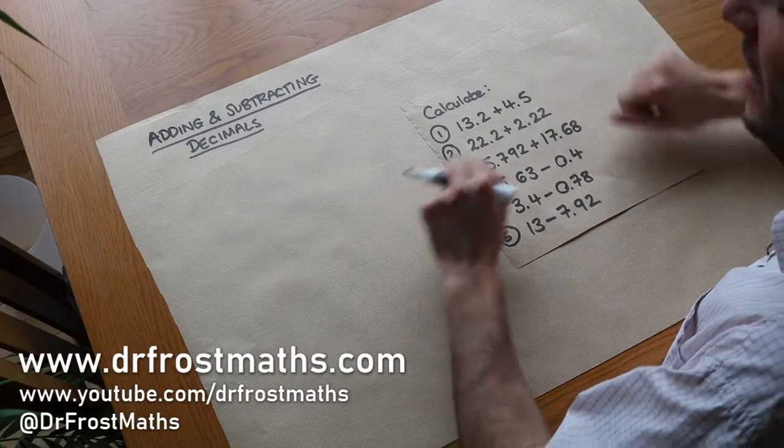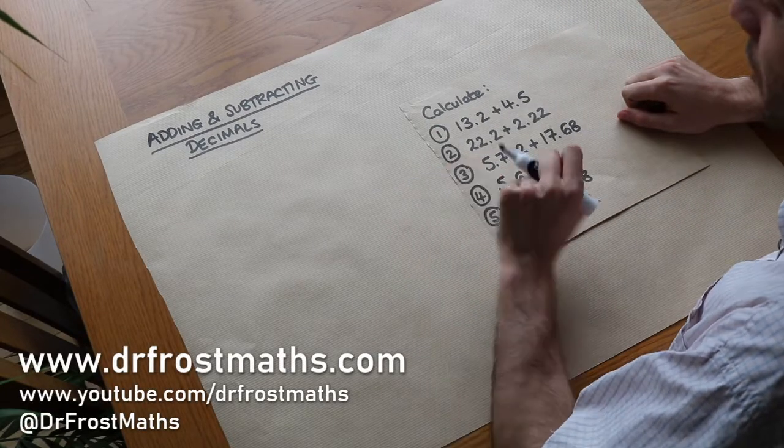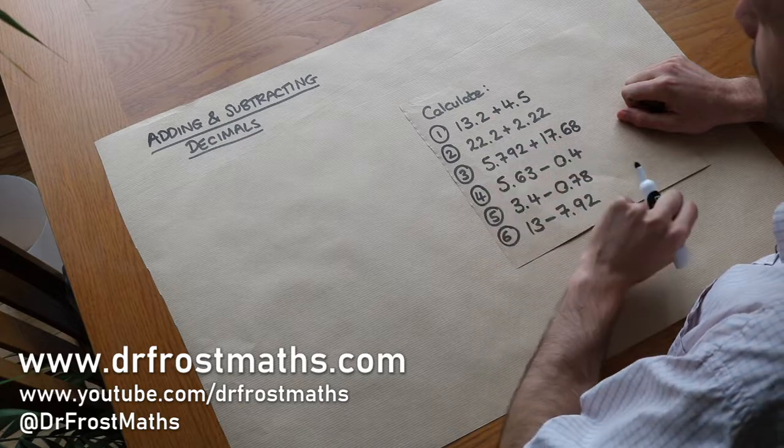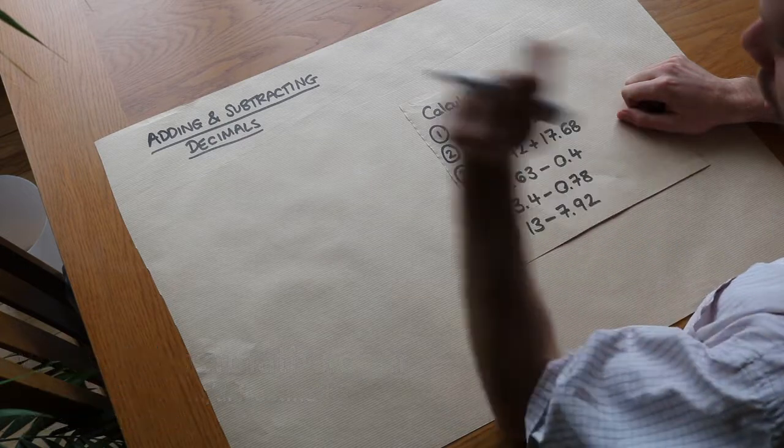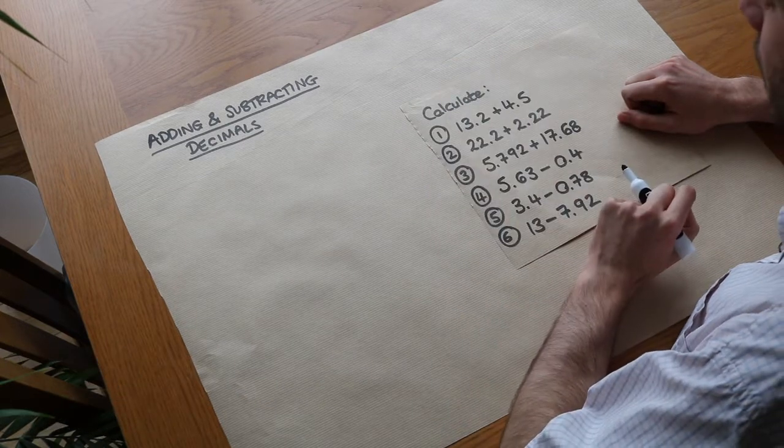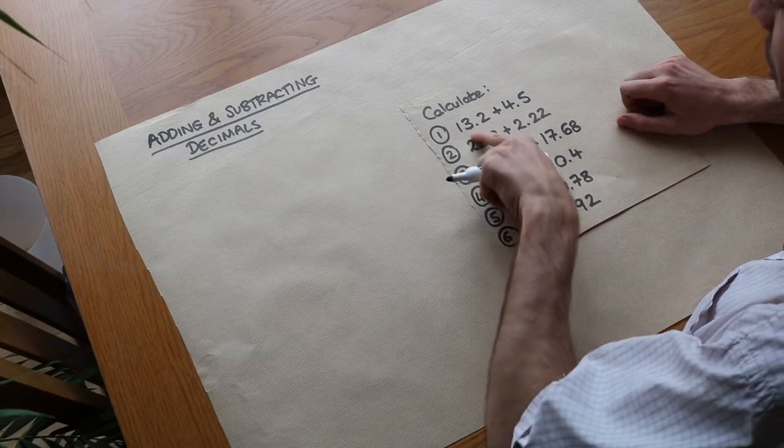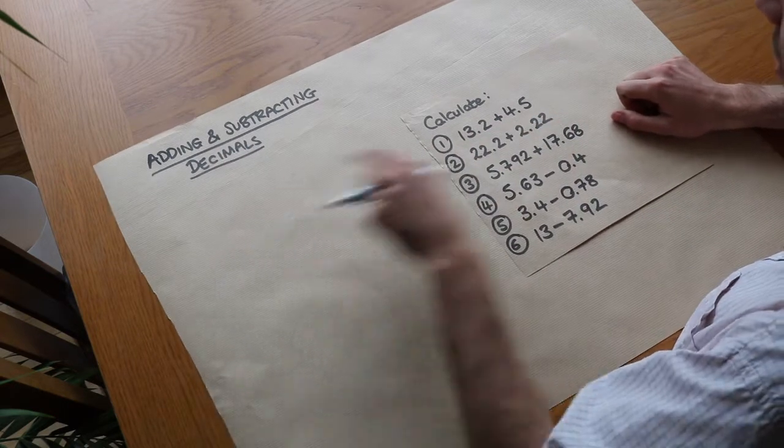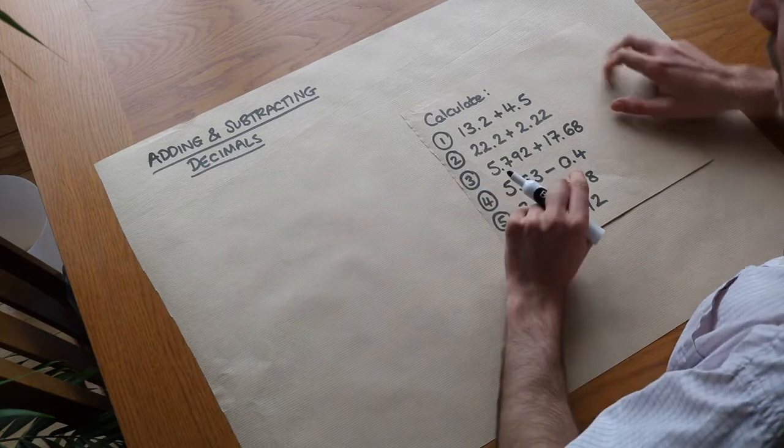Hello and welcome to this video on adding and subtracting decimals. It's effectively the same as adding and subtracting whole numbers if we use column addition or column subtraction, and the key is just making sure that when you write your digits in the columns, you observe place value.